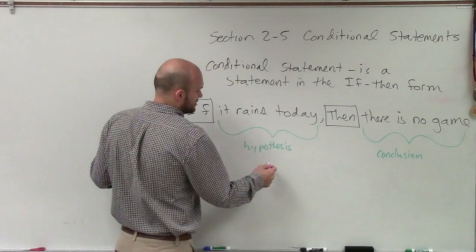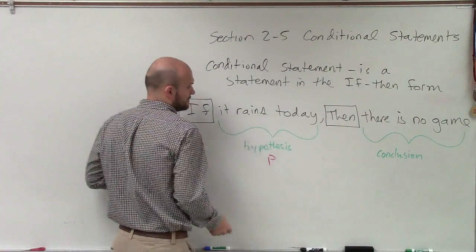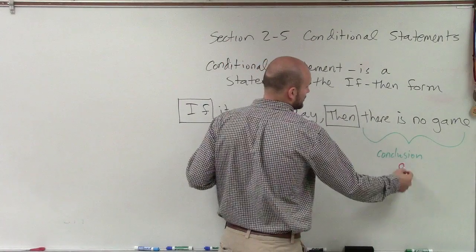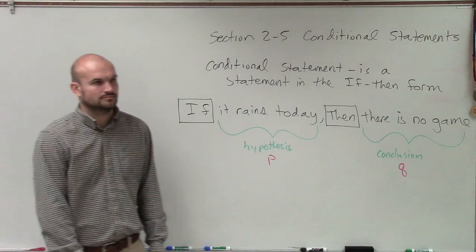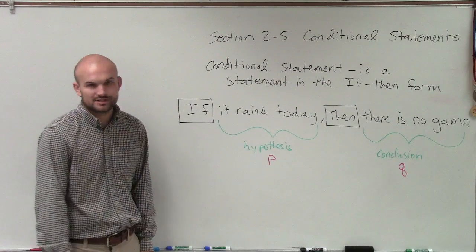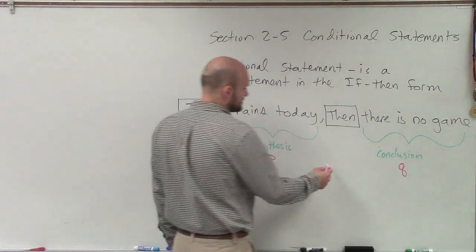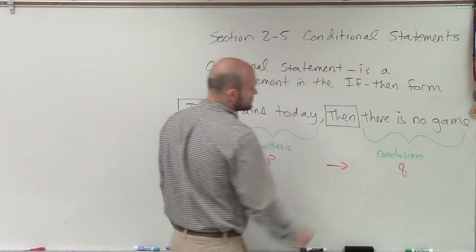And what we call this is P. We call the conclusion Q. And the other way that we can write a conditional statement, or a lot of times we'll just represent one, is with the arrow.